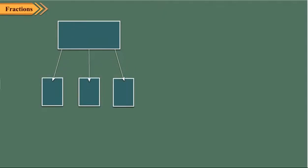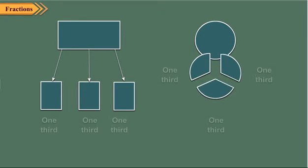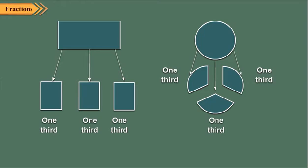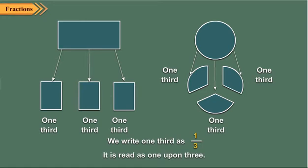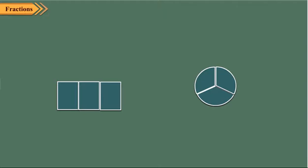Now observe the shapes shown here. Each shape has been divided into three equal parts. Each part is one third of the whole. We write one third as one upon three, and it is read as one upon three. When you add these parts again, you get a whole — so three one thirds together make a whole.